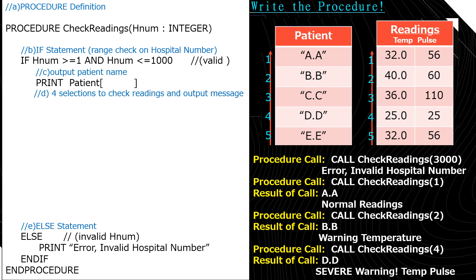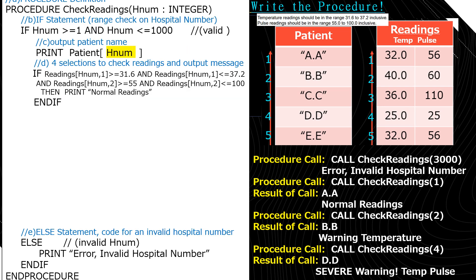For step c, once we've called the procedure with a valid hospital number, we need to output the patient's name. We're going to print from the array patient at index hnum — so we say print patient[hnum]. That means go to the patient array at index hnum, whether it's the first, second, or third index, and display the name stored at that index.